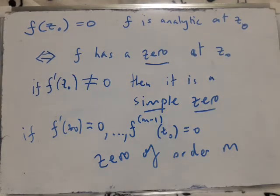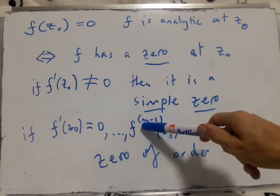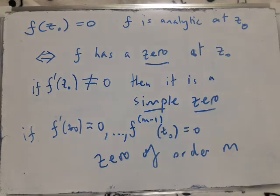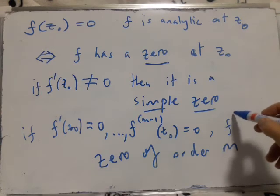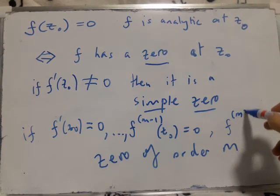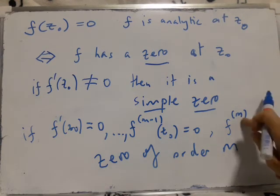So this actually also works for a simple zero. With a simple zero, m is 1, in which case you've got f, the zeroth derivative of f is 0. I should say then after that, we need to write that f m is not 0.